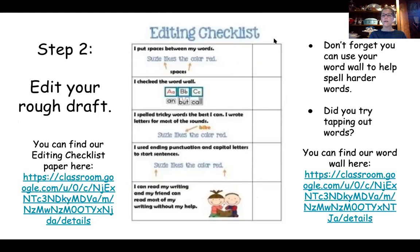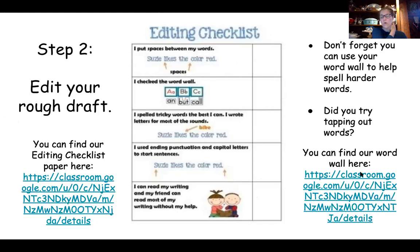Step two is your editing checklist. Don't forget to edit your rough draft. You can find the editing checklist here, and you can also find the word wall over here. Use this editing checklist, and don't forget to use the word wall. And remember, now that we can tap out and blend, there are so many words that we can tap out.